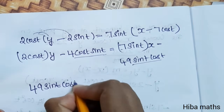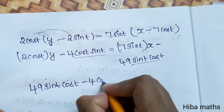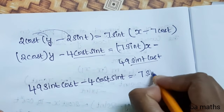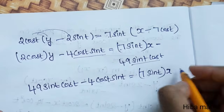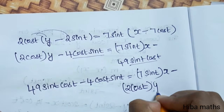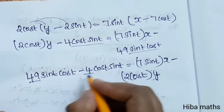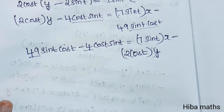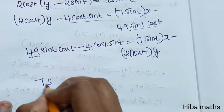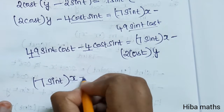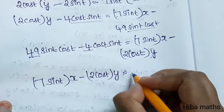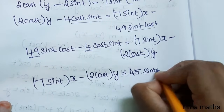We get 49 sin t cos t minus 4 cos t sin t on the right side, giving 45 sin t cos t. Rearranging: 7 sin t into x minus 2 cos t into y equals 49 sin t cos t. This is the final answer for the normal.